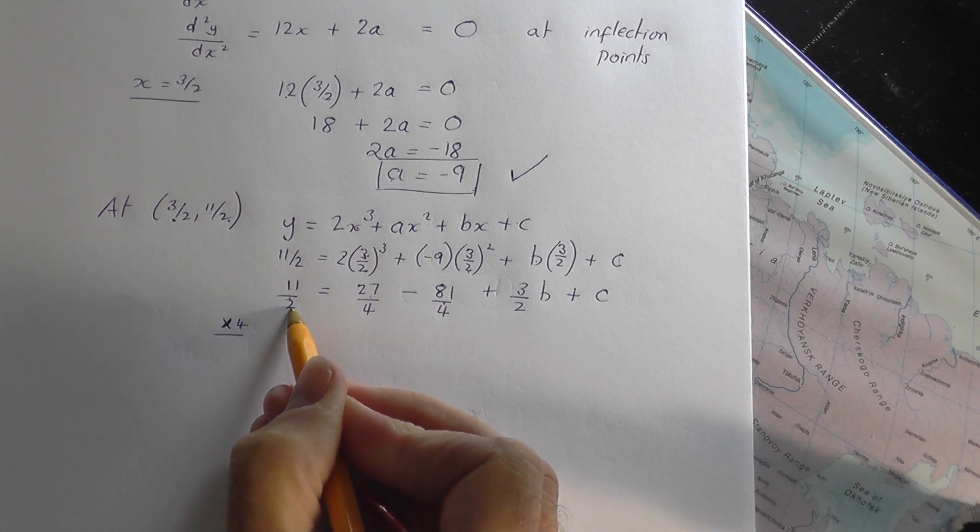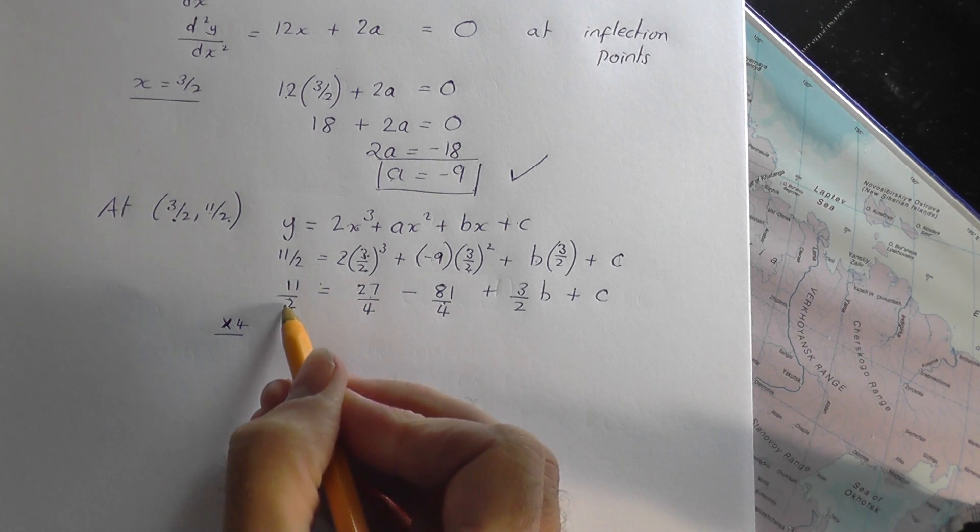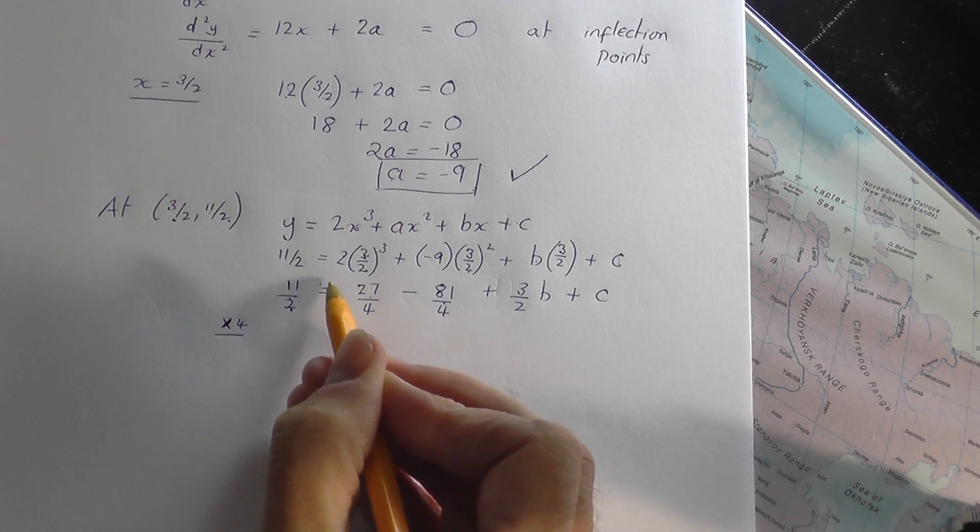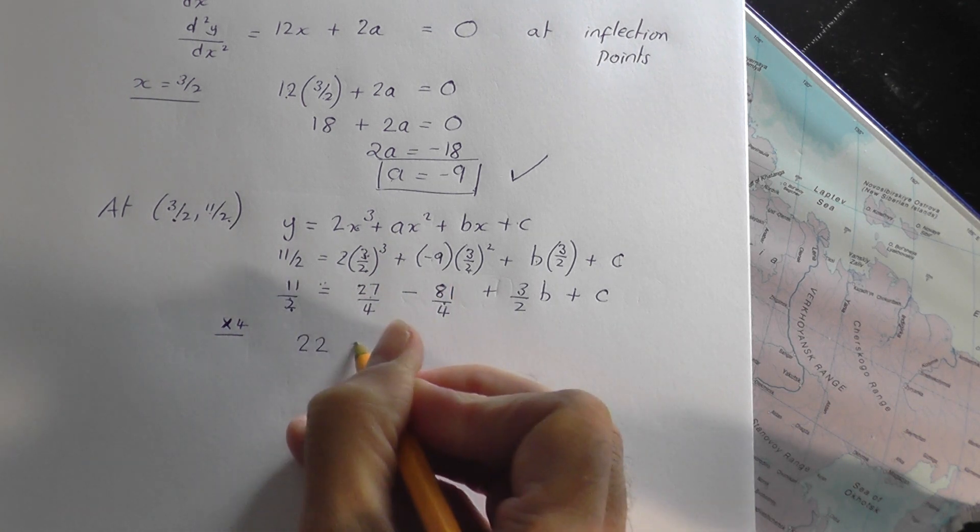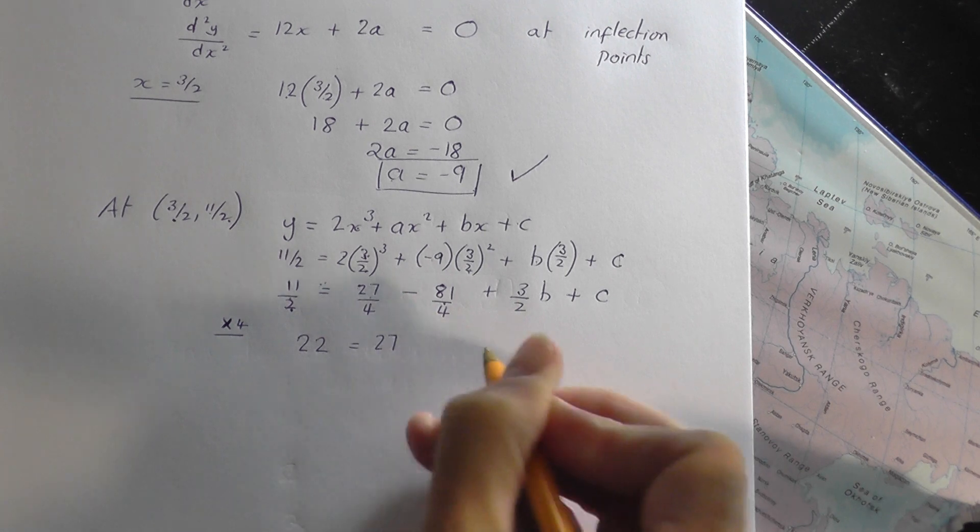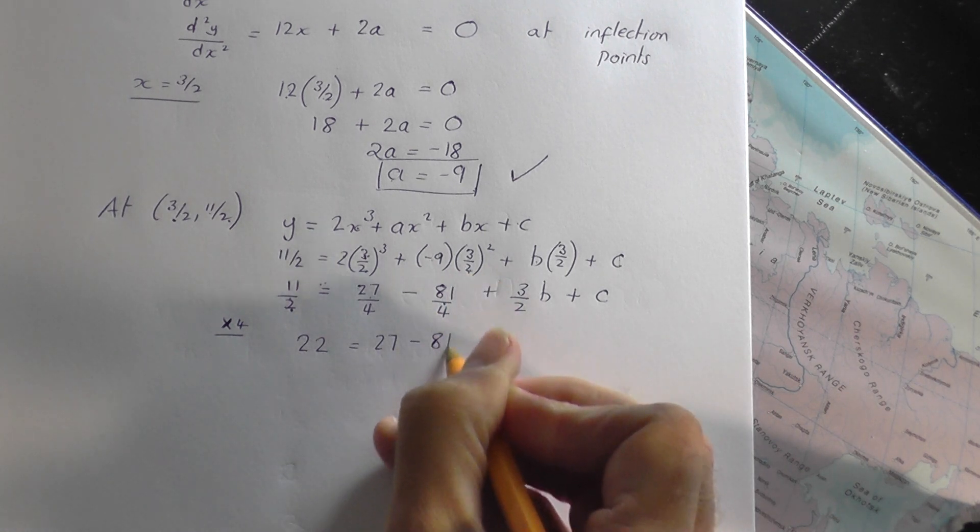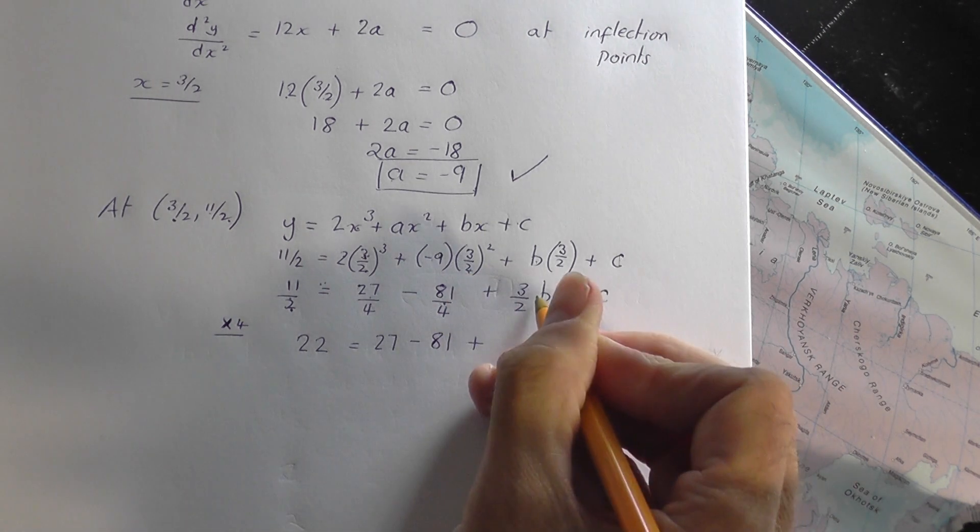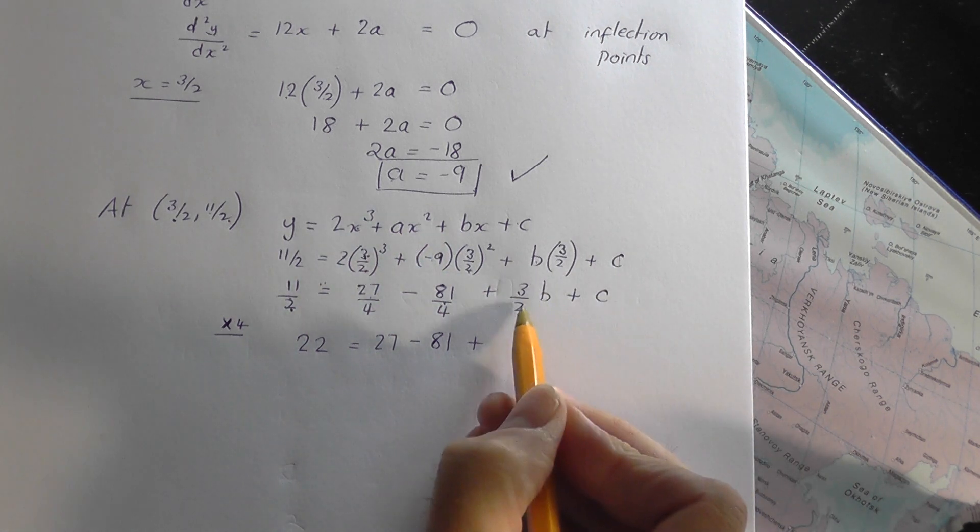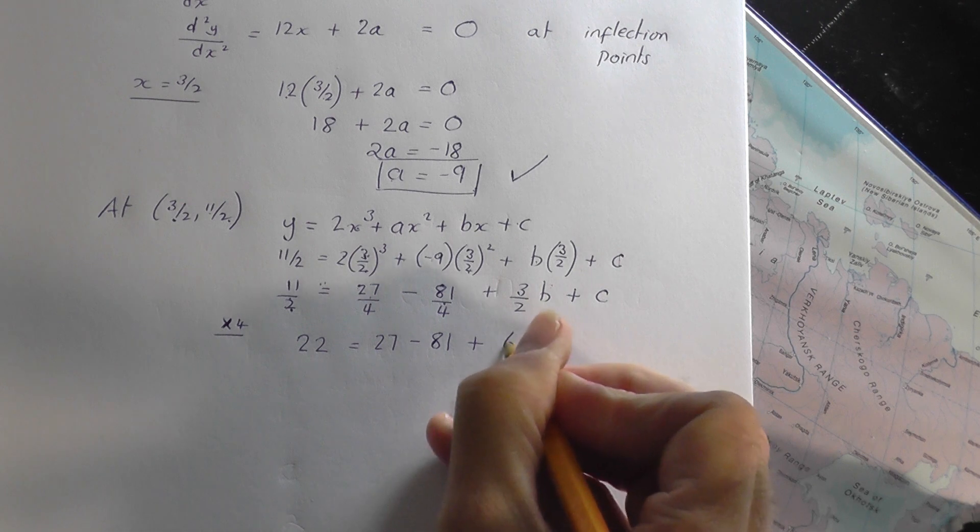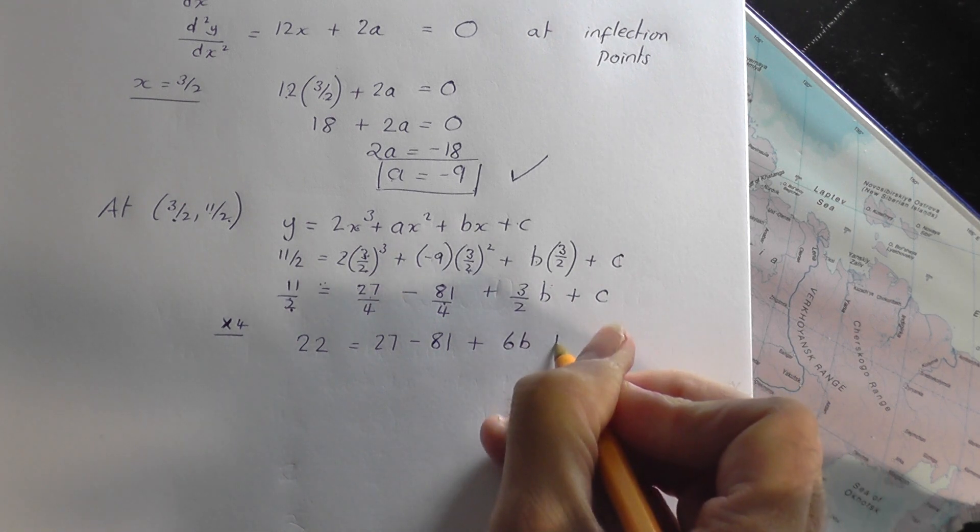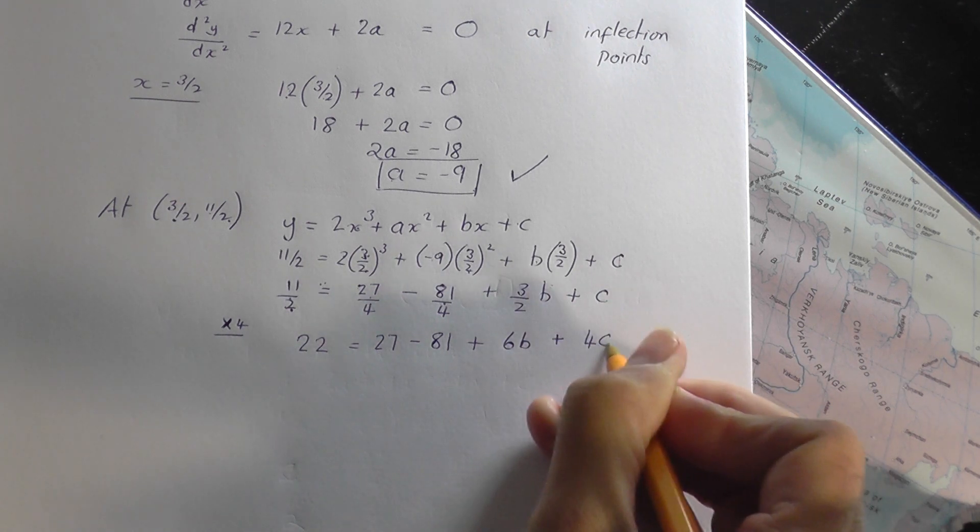If I times this by 4, the 4 on the top and the 2 on the bottom would cancel to get 2 on the top times the 11, you'd get 22. Times that by 4, you'd get 27. Times that by 4, negative 81. Times that by 4, the 4 on the top, 2 on the bottom cancel to give 2 on the top. 2 times 3, you're going to get 6b. And then plus times that by 4, you get 4c.